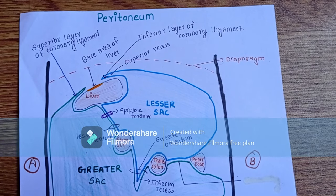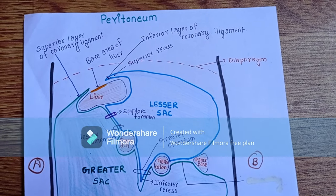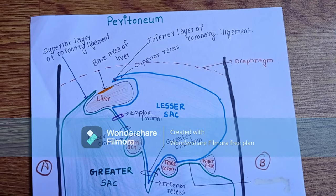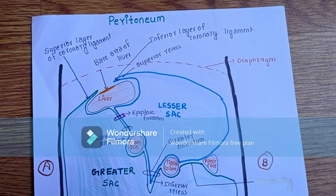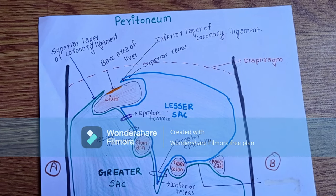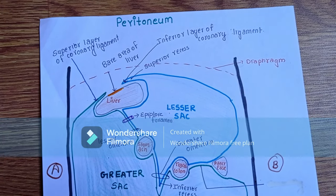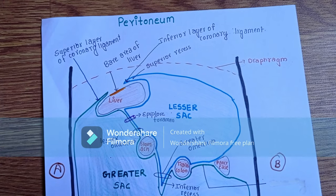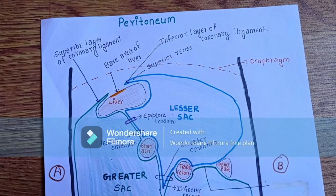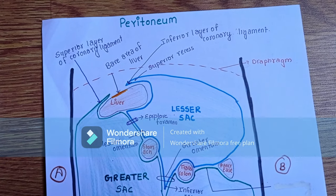Hello everyone, hope you all are doing fine. Let us today discuss about the peritoneum. Peritoneum is a large serous membrane lining the abdominal cavity. It is composed of fibrous tissue and mesothelial cells. Fibrous tissue forms the outer layer and provides strength, while the mesothelial cells form the inner layer and secrete fluid.